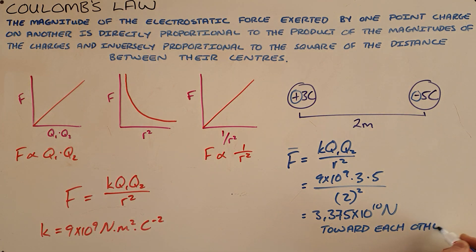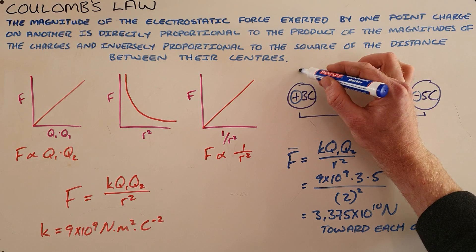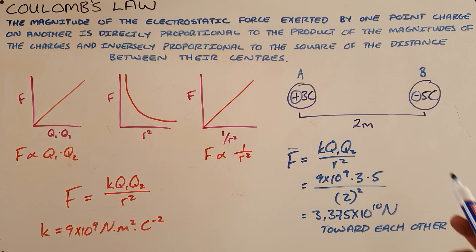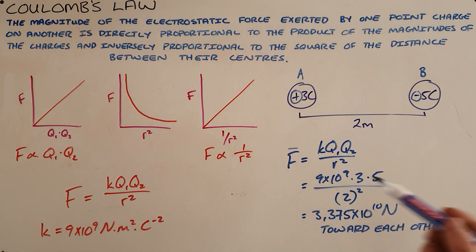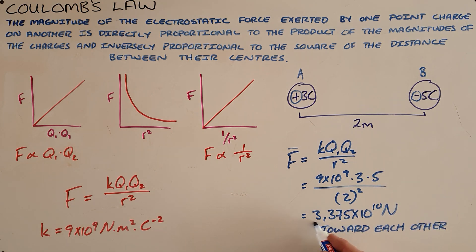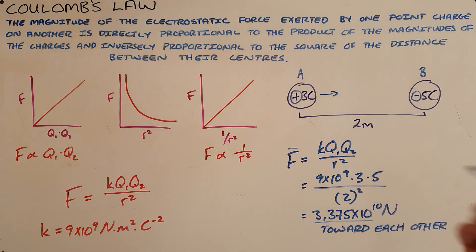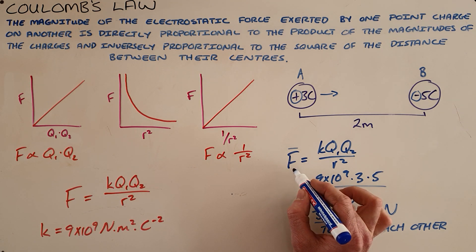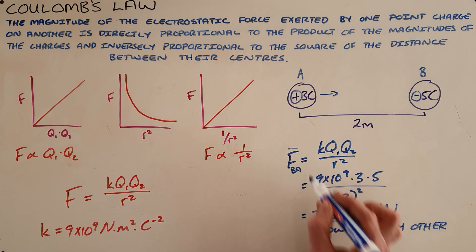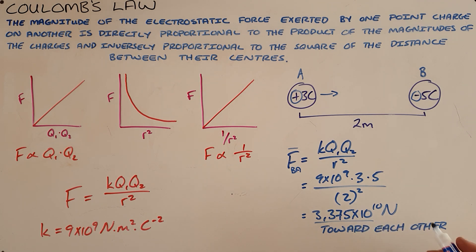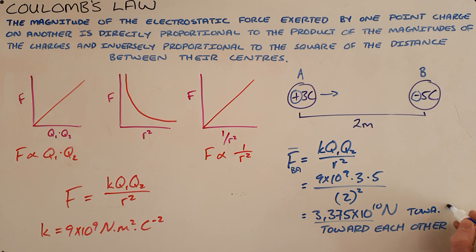If the objects have like charges, the force would be away from each other. Something that commonly confuses people is when you are asked to determine the force that B exerts on A — in which case the magnitude remains the same, but B is pulling A towards the right. So the force that B exerts on A would be 3.375 times ten to the power of ten Newtons, directed towards B.